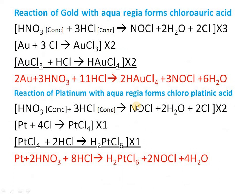Aqua regia gives nitrosyl chloride, water, and nascent chlorine. Gold, having 3 valencies, forms AuCl₃. AuCl₃ reacts again with acid to form HAuCl₄, known as chloroauric acid. Combining all partial equations, gold reacts with aqua regia to give HAuCl₄, nitrosyl chloride, and water — this is the formation of chloroauric acid, which is a soluble complex.